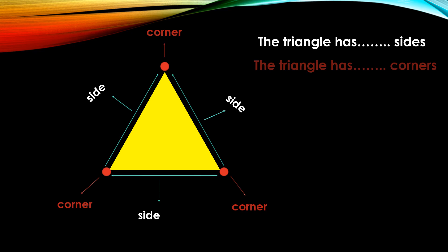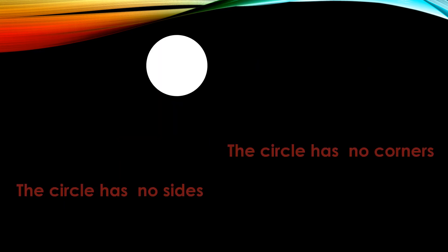The triangle has three sides and three corners. The circle has no corners and the circle has no sides.